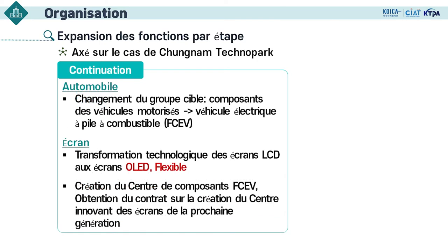En ce qui concerne l'industrie automobile, Volvo a déclaré que les véhicules équipés d'un moteur à combustion interne n'ont aucun avenir à long terme et qu'ils sont résolus à devenir un constructeur 100% électrique d'ici 2030. TM a aussi montré son intention de ne plus construire et vendre des voitures diesel ou essence d'ici 2035. Malheureusement, l'industrie automobile de Chungnam a beaucoup accompagné des entreprises de pièces détachées pour les véhicules à moteur à combustion interne jusqu'ici.